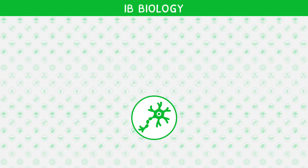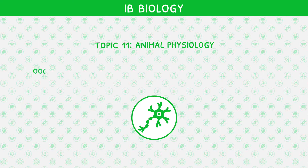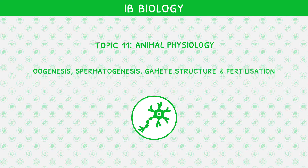Welcome back to our IB Biology video series. This is the fifth video in IB Biology Topic 11, Animal Physiology, where we will be looking at oogenesis, spermatogenesis, gamete structure, and fertilization.